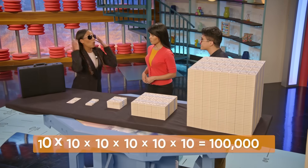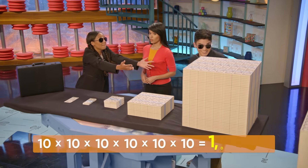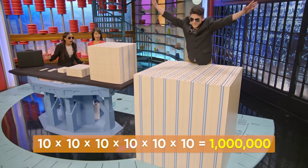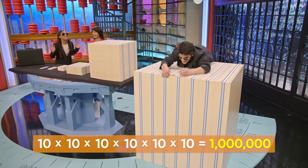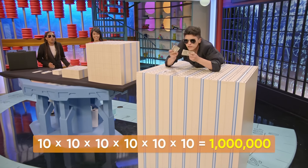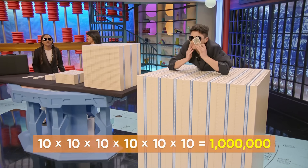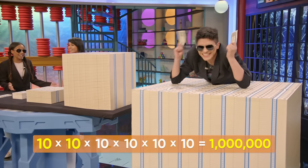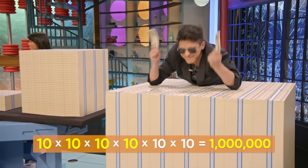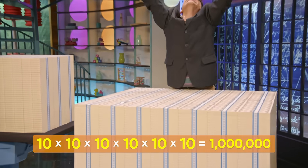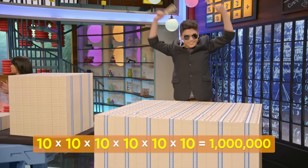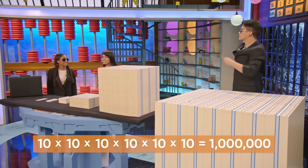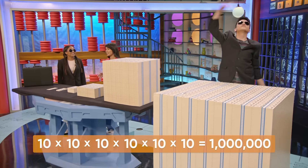And finally, one million dollars! This is ten times as much. One million dollars can be represented as ten times ten times ten times ten times ten times ten. You can see that each pile has ten times more than the next one.